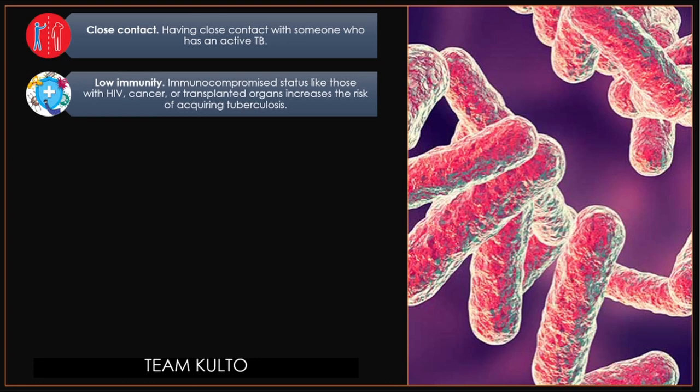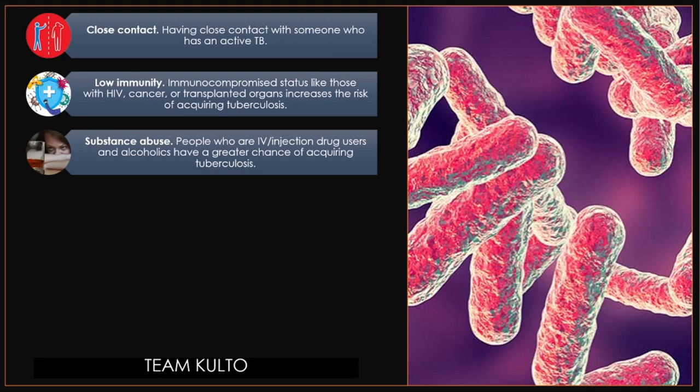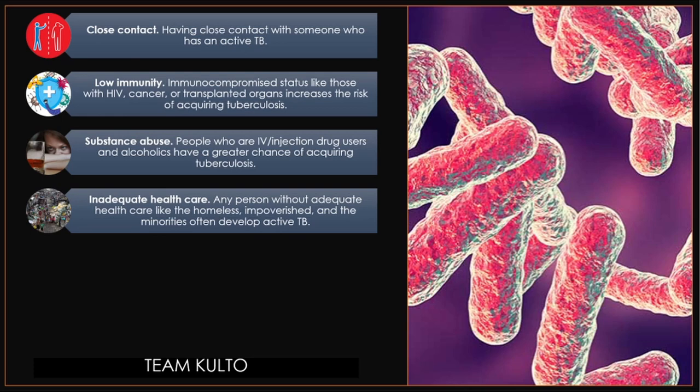Substance abuse — people who are IV or injection drug users and alcoholics have a greater chance of acquiring tuberculosis, because their immune system is compromised. Inadequate health care — any person without adequate health care, like the homeless, impoverished, and minorities, often develop active TB.